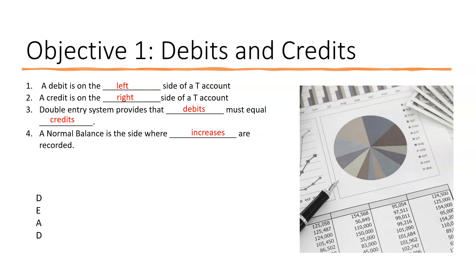Here's an acronym you can use to remember which accounts have debit normal balances: DEAD — D-E-A-D — which stands for Dividends, Expenses, Assets, and Dividends. So normal debit balances are expenses, assets, and dividends. Debits increase these accounts. If it's not DEAD, it's a credit — everything else has a credit normal balance and increases with a credit.